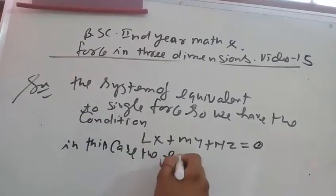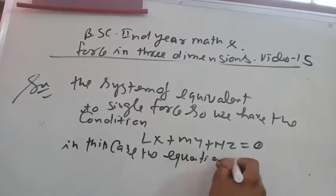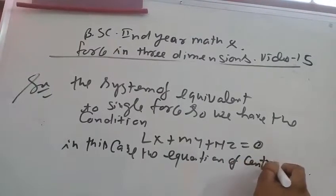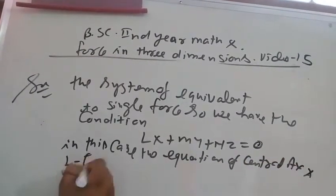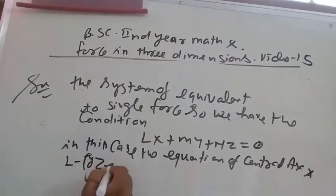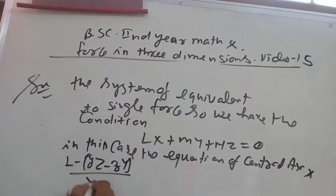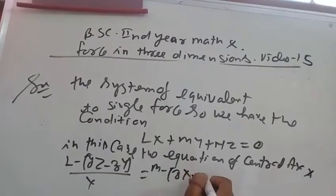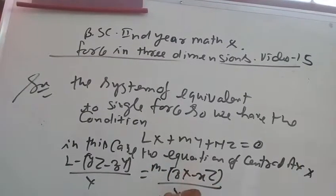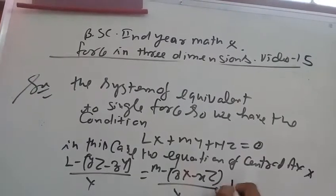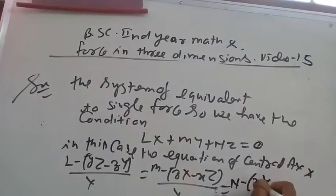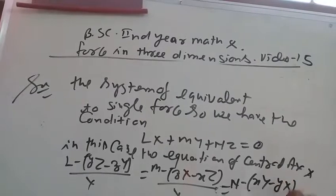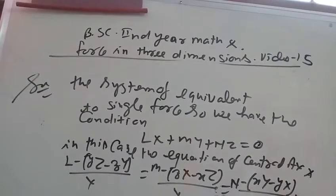The equation of the central axis is: L minus small YZ minus small ZY upon X equals M minus small ZX minus small XZ upon Y equals N minus small XY minus small YX upon Z equals P.